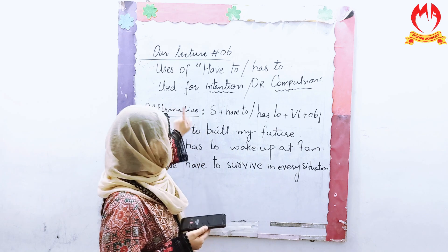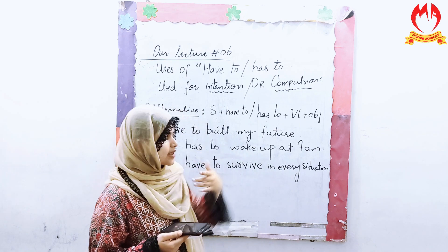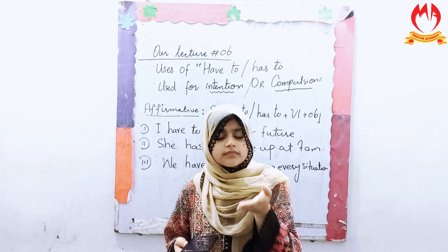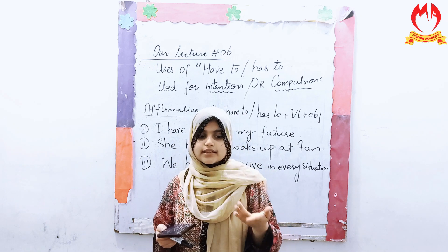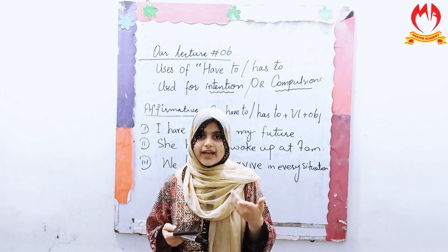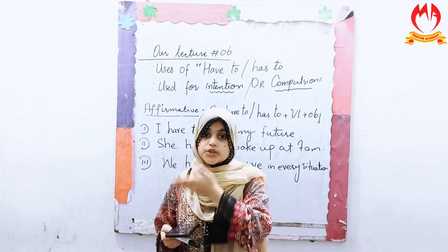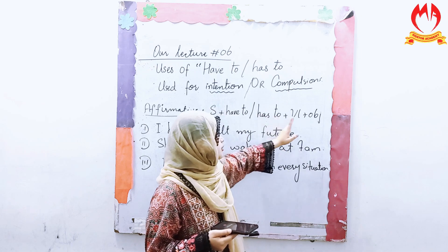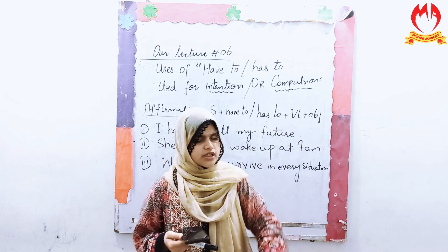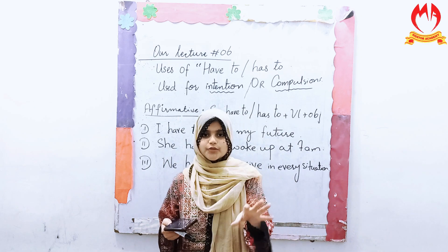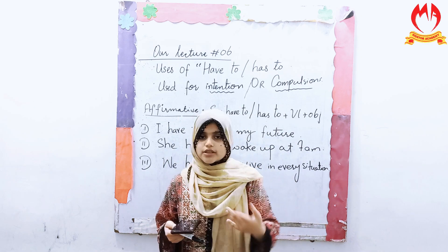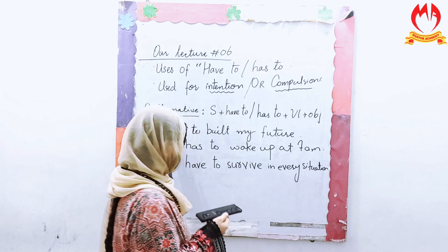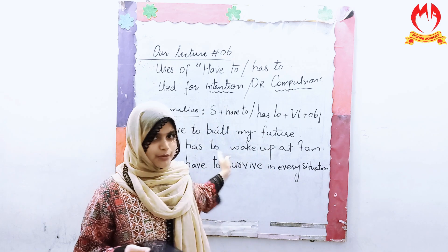So affirmatively, we will make the first sentences like this. We will use the subject and then 'have to' or 'has to', which varies according to the situation. After 'has to' we always use the base form of the verb. And then lastly, of course, the object. So these are the simplest examples I have written here on the board.